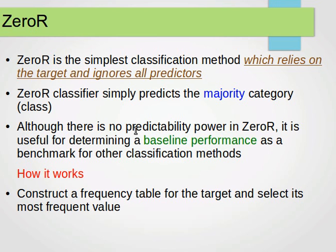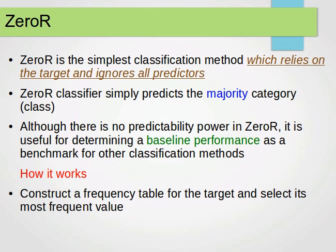Although there's no predictability power in ZeroR, it's useful for determining a baseline performance or baseline classification. That baseline classifier can be used as a benchmark for other classification methods. By a baseline here we mean this is the least accurate classifier that we can have. If we develop a model and its accuracy is worse than this, then the model is useless.